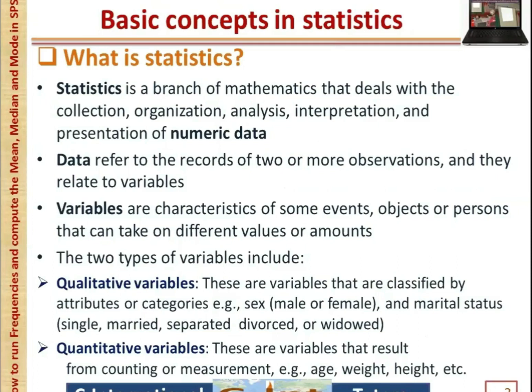Variables are characteristics of some events, objects, or persons that can take on different values or amounts. The two types of variables include qualitative variables — these are variables that are classified by attributes or categories. For example, sex can be male or female, and marital status can be single, married, separated, divorced, or widowed.